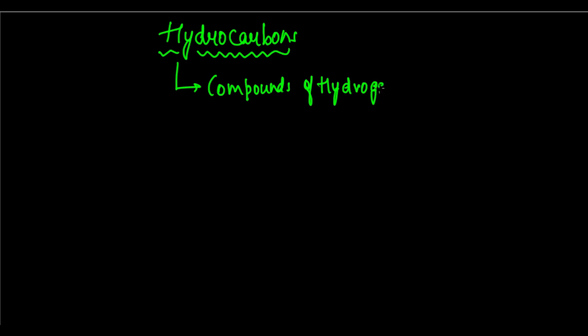So when carbon and hydrogen together form bonds, they are usually called hydrocarbons. Sometimes oxygen may also be present, but they mainly involve hydrogen and carbon. Hydrocarbons basically involve carbon-carbon catenation compounds - there is catenation where carbon forms bonds with other atoms of carbon, and hydrogen is also involved.